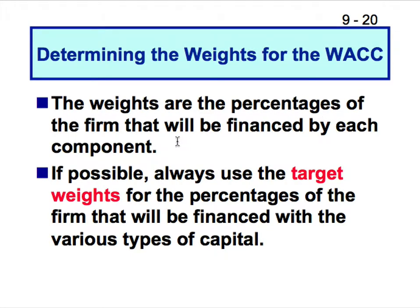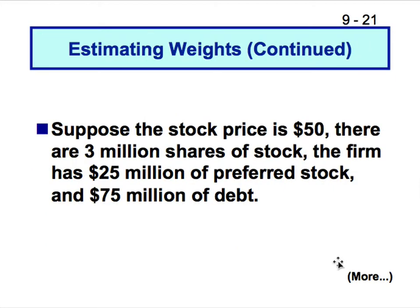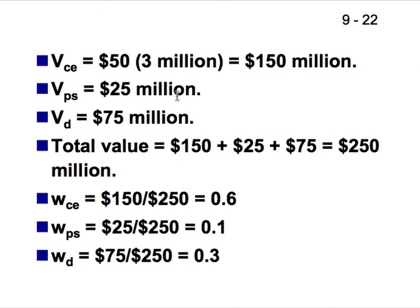Determining the weights for WACC: weights are percentages of the firm financed by each component, and we use target weights, not historical weights. Suppose the stock price is $50 with 3 million shares, preferred stock is $25 million, and debt is $75 million. The value of common equity VCE = 150 million. Total enterprise value = $250 million. The weights are: common equity 0.6, preferred stock 0.1, debt 0.3 — and they add up to 1.